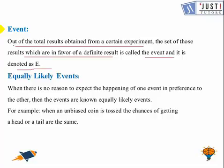Now it's here equally likely events. So when there is no reason to expect the happening of one event in preference to the other, then the event is known as equally likely event. So it's an example for you when an unbiased coin is tossed, the chance of getting head or a tail are same.